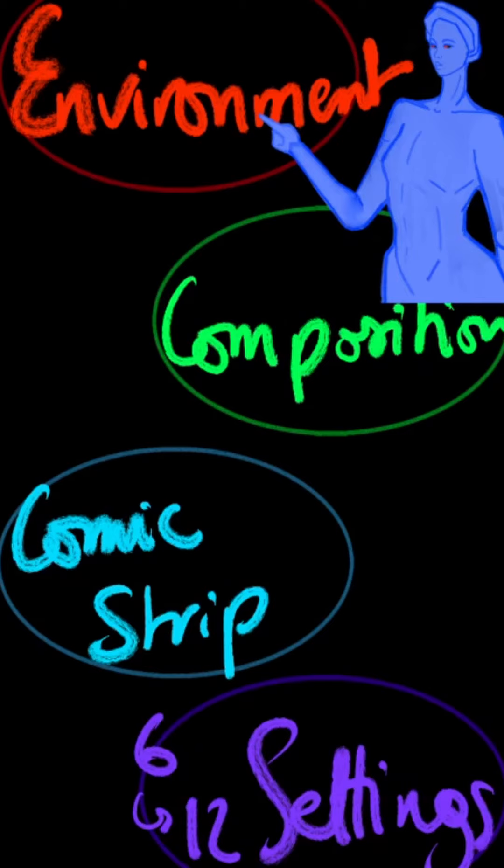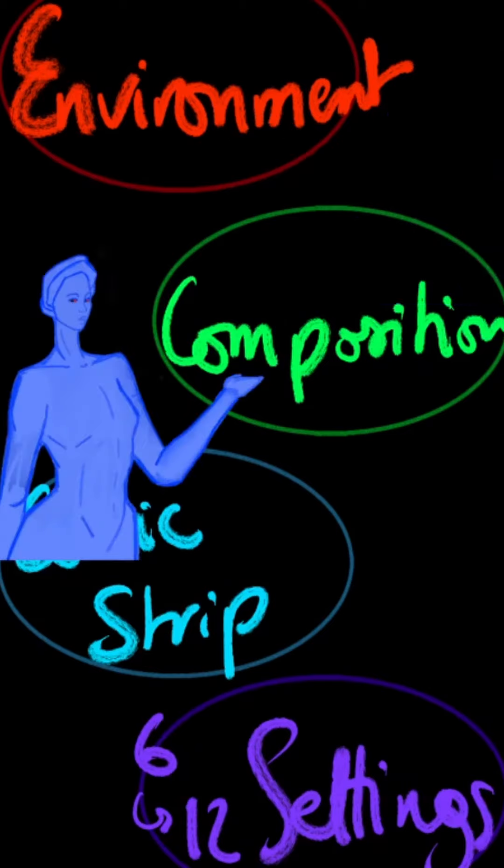Then draw 6 to 12 environments. When you're establishing a composition, start by defining a focal point.